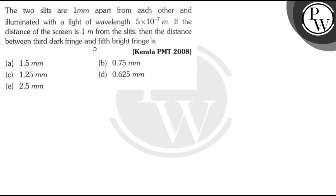Let us first understand this question. There are two slits, and the distance between them is 1 mm. They are illuminated with light of wavelength 5 × 10⁻⁷ meter. The distance of the screen from the slit is 1 meter.